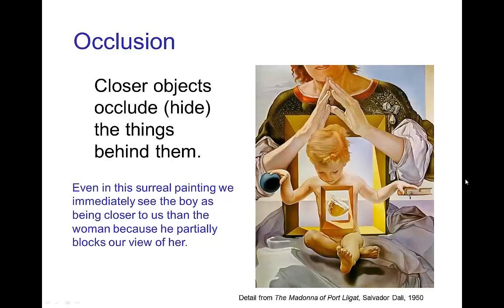The very simplest visual cue is occlusion — simply the fact that when we have two objects, the object that's closer to us will hide parts of an object that is behind it. We see that in this painting: the boy is in front of the woman, and we know that because his body blocks part of our view of her.